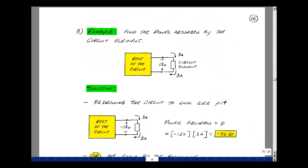Let's do an example of power absorbed. Suppose you have a circuit and a two-terminal element, and I measure the voltage and the current. The voltage is in this direction as plus 12, and the current is flowing in this direction as 3 amps. Find the power absorbed by the element.